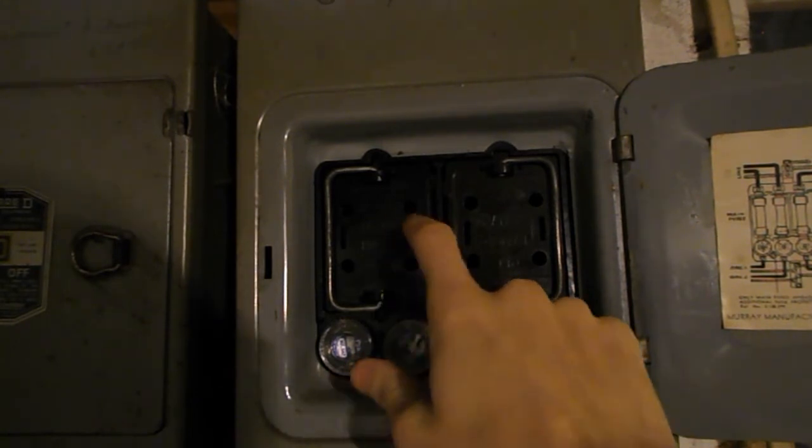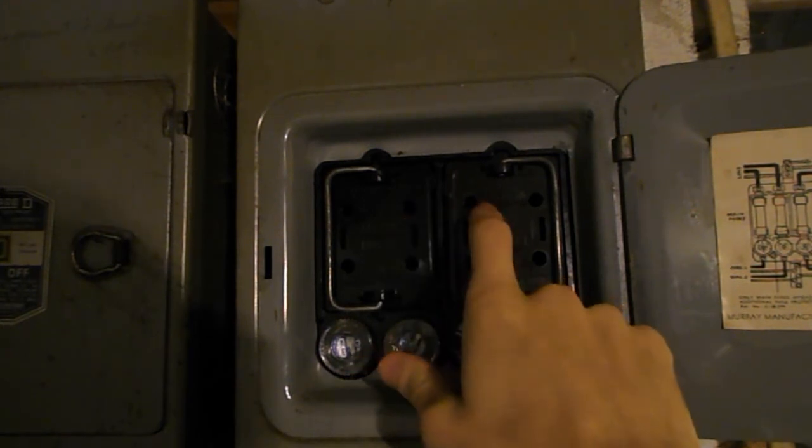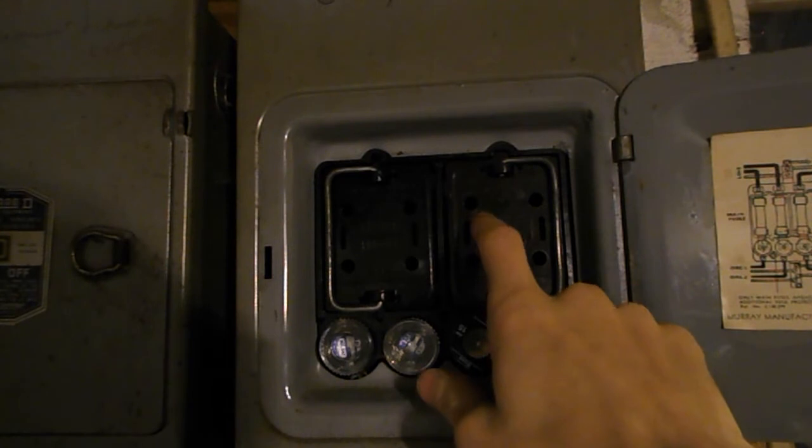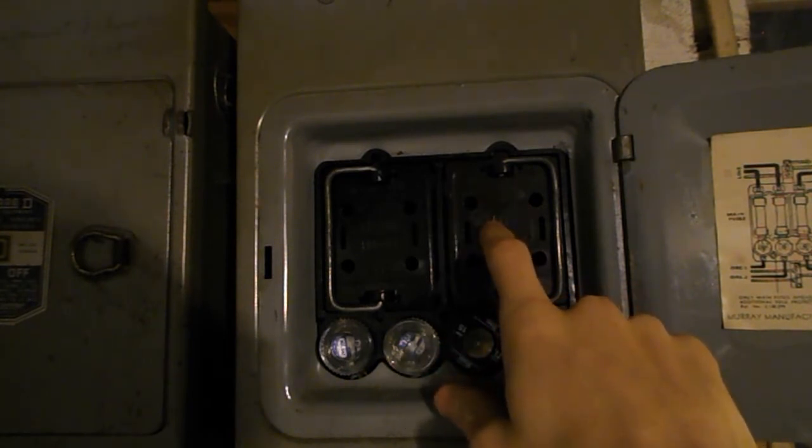And then there's the range block, which is normally used for either an electric stove, electric water heater, or electric dryer. This is a 240-volt circuit.